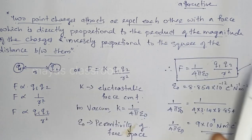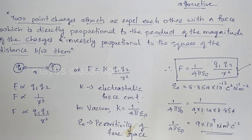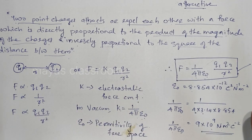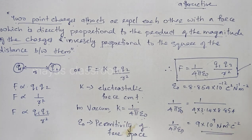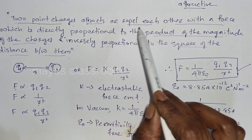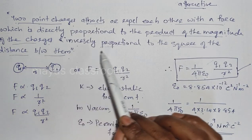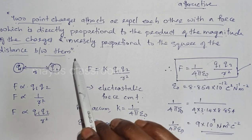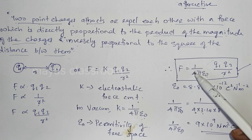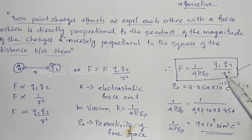In Coulomb's Law, two charges are located and produce an electrostatic force. We can see that the medium matters. Comparing with gravity, gravitational force is independent of the medium, but electrostatic force depends on the medium. The equation is F = 1/4π·epsilon-zero · q1·q2/r².